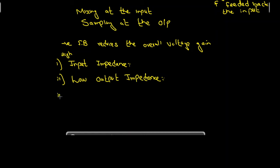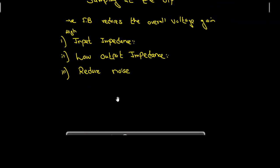The third thing that negative feedback does is to reduce noise. Noise is an unwanted signal, so we want it to be reduced. The fourth thing it does is to provide more linear operation.